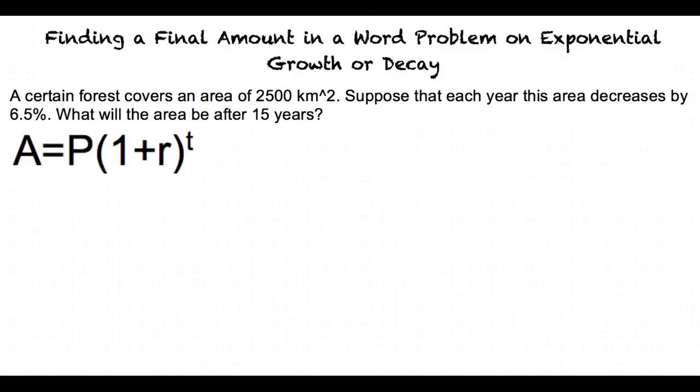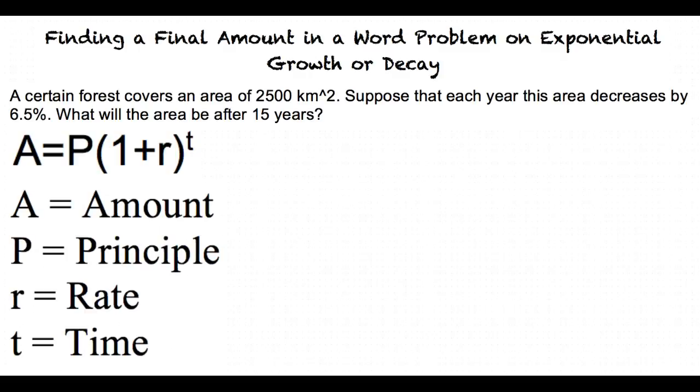A is equal to P times 1 plus r to the t power. A stands for final amount, while P stands for principle or starting amount.